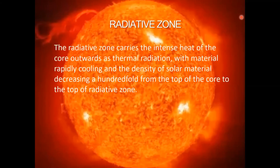Radiative Zone: the Radiative Zone carries the intense heat of the core outwards as thermal radiation, with material rapidly cooling and the density of solar material decreasing a hundred-fold from the top of the core to the top of the Radiative Zone.